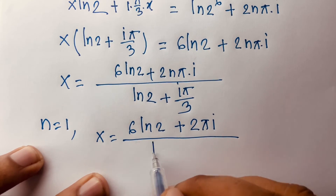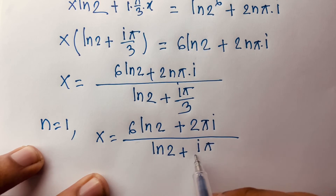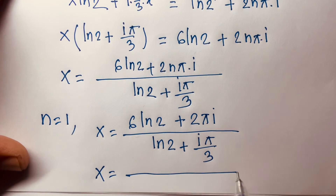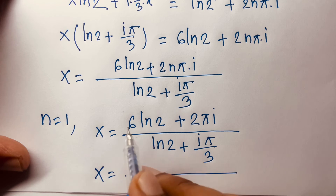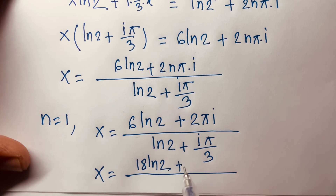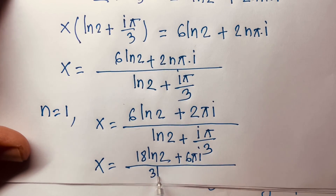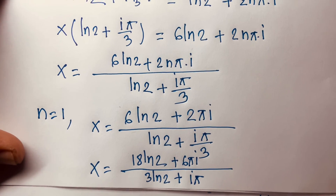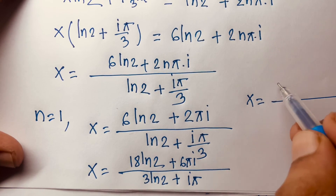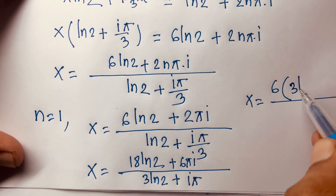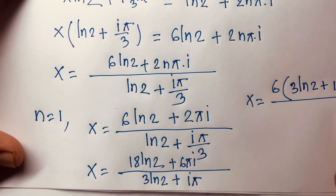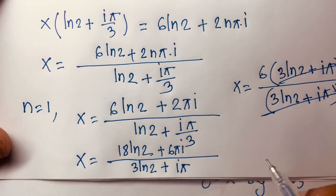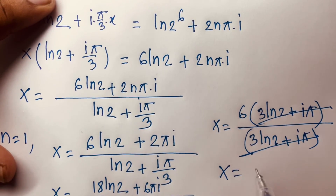Setting n = 1, we get x = (6·ln2 + 2πi) / (ln2 + iπ/3). Multiplying numerator and denominator by 3: numerator becomes 18·ln2 + 6πi, denominator becomes 3·ln2 + iπ. Factoring 6 from the numerator: 6(3·ln2 + iπ) / (3·ln2 + iπ). The terms cancel, and we find x = 6. This is our final answer.